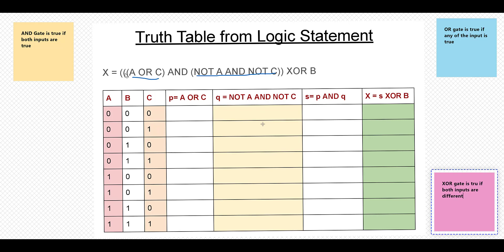Then there is a bracket here, so this part is here. I am giving it name p and this is q, forgive my writing. And s is p AND q.